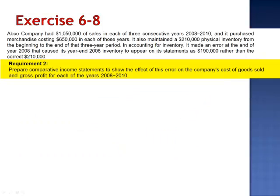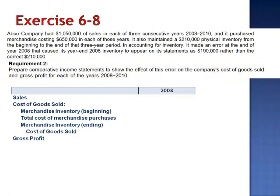We're then asked to prepare comparative income statements to show the effect of the error on cost of goods sold and gross profit for each year, 2008 through 2010. Starting with 2008: sales of $1,050,000 were correct, and the beginning inventory of $210,000 was also correct. Adding purchases of $650,000 gives a subtotal of $860,000. But due to the error, only $190,000 was subtracted as ending inventory instead of the correct $210,000. By understating the ending inventory, cost of goods sold is overstated by $20,000, which understates gross profit by $20,000.